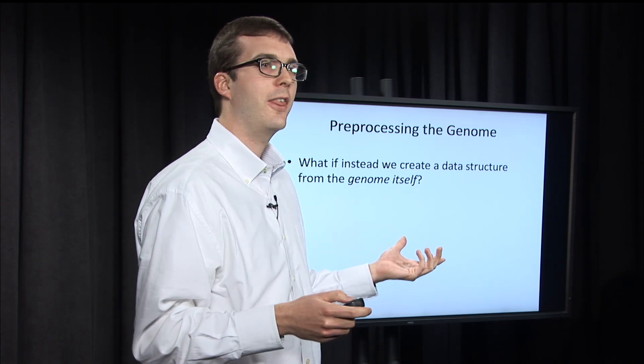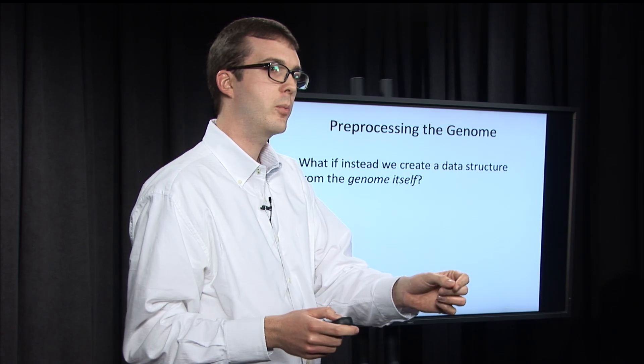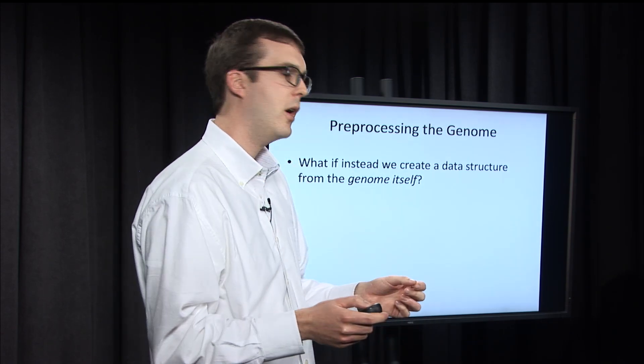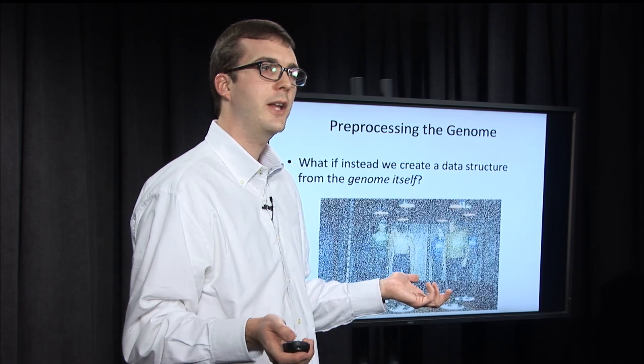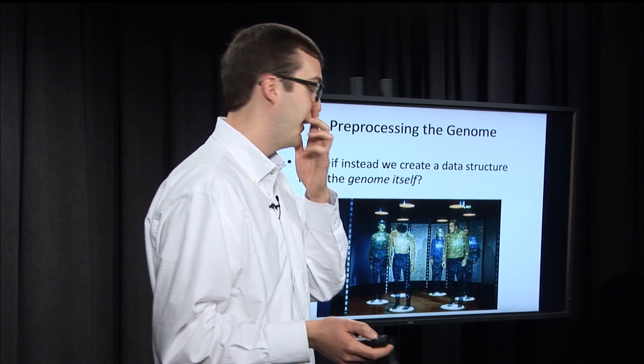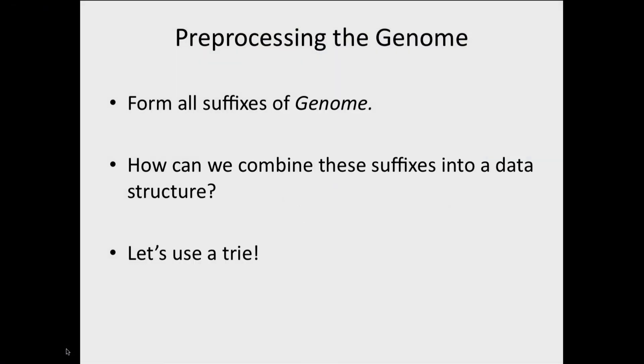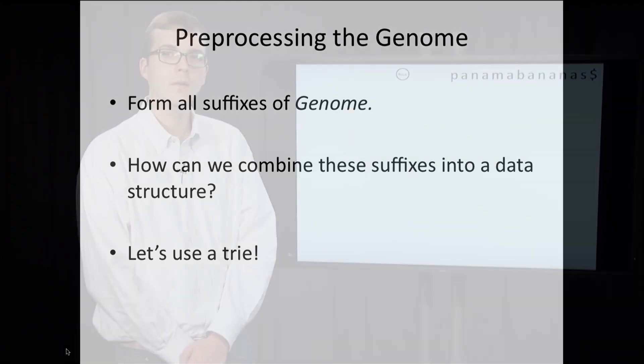The analogy I thought is if each pattern is going to the precise location in the genome that it needs to go, well, this is a transporter. So all nerdiness aside, here's what we're going to do. We're going to form all suffixes of our genome. And then the question would be, how is it that we combine these suffixes into a data structure? The one that we've seen is a trie. You may be curious why we're forming all suffixes of genome, but just bear with me for a second and you'll see.